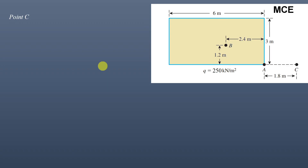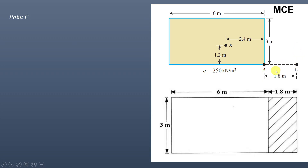Point C is located outside the rectangular loaded area. To handle this, we extend the rectangle to pass through point C, creating a large rectangle of size (6 + 1.8) = 7.8 meters × 3 meters. We then subtract the small rectangle of size 1.8 m × 3 m that lies outside the original loaded area.